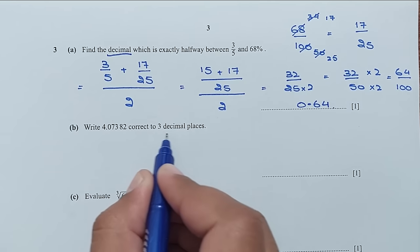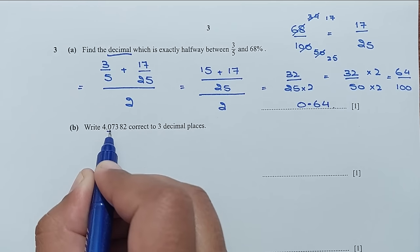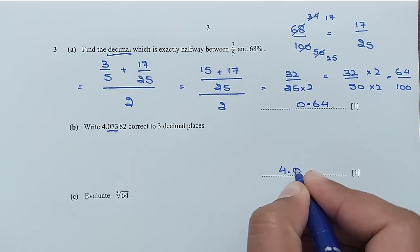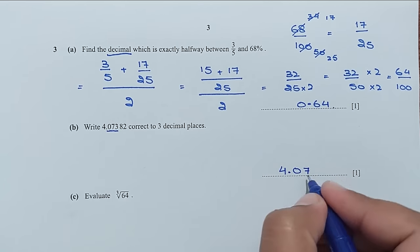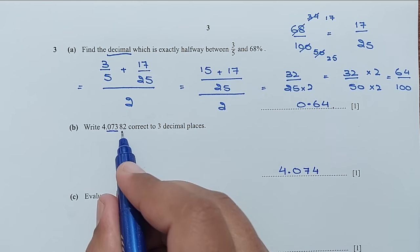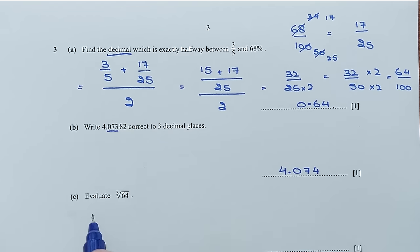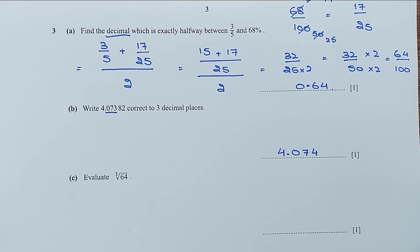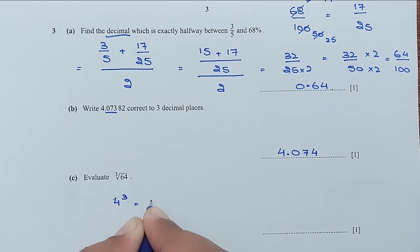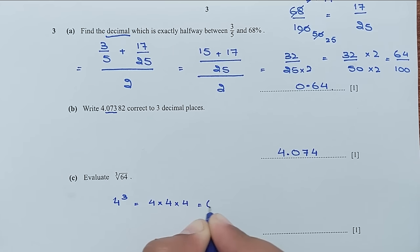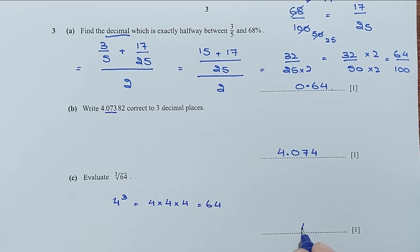Now for part B: write this number correct to 3 decimal places. The first 3 decimal places give 4.07, and the 3 rounds to 4 because the next digit is 8, which is more than 5, so we round up. Now for part C: evaluate the cube root of 64. We know that 4 cubed is 4 times 4 is 16, and 16 times 4 is 64, so this is 4.